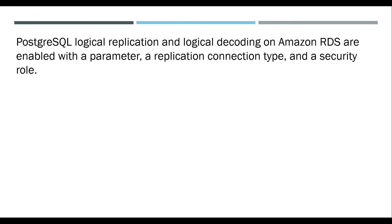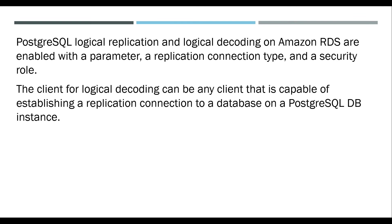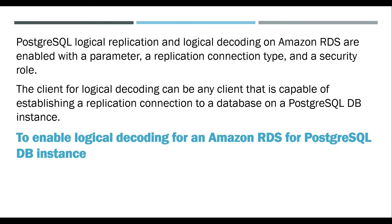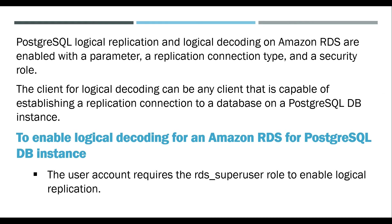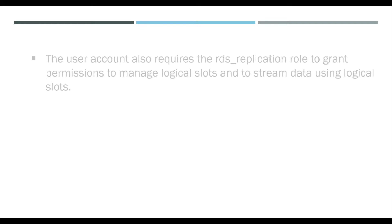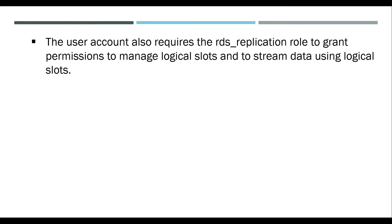PostgreSQL Logical Replication and Logical Decoding on Amazon RDS are enabled with a parameter, a replication connection type, and a security role. The client for logical decoding can be any client capable of establishing a replication connection to a database on a PostgreSQL DB instance. To enable logical decoding for an Amazon RDS for PostgreSQL DB instance, the user account requires the rds_superuser role to enable logical replication, and also requires the rds_replication role to grant permissions to manage logical slots and to stream data using logical slots.